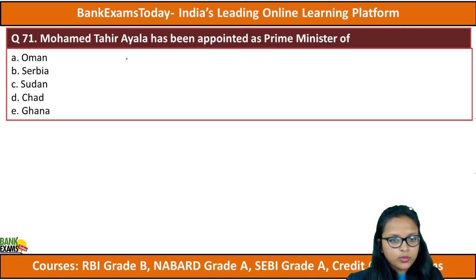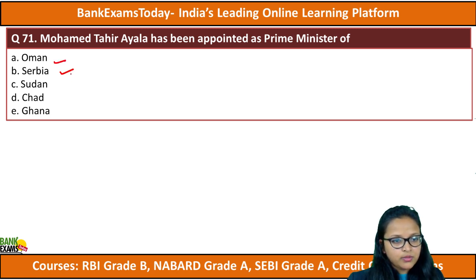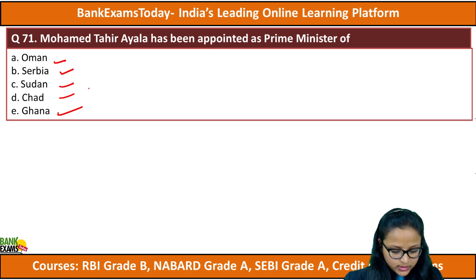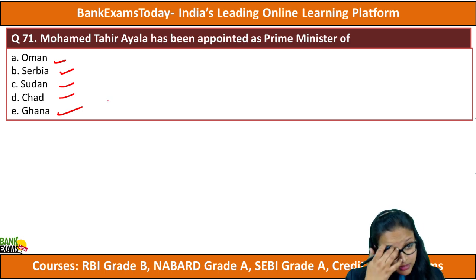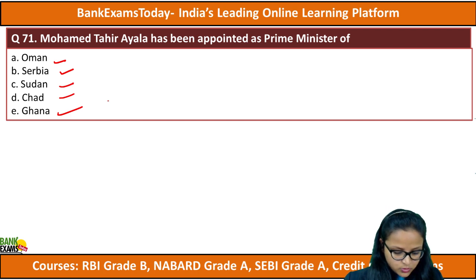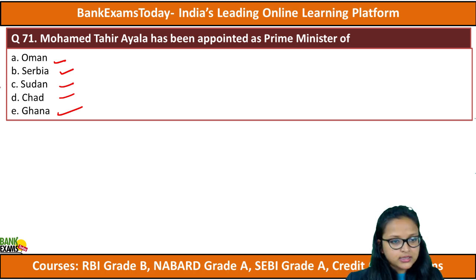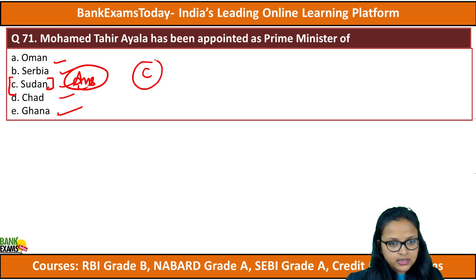Moving to question 71: Muhammad Tahir Ayala has been appointed the Prime Minister of which of the following countries? Oman, Serbia, Sudan, Chad, or Ghana. The correct answer is C — Sudan. Muhammad Tahir Ayala has been appointed the Prime Minister of Sudan.